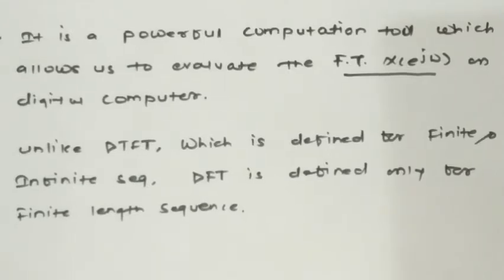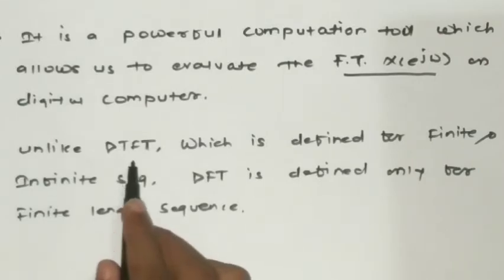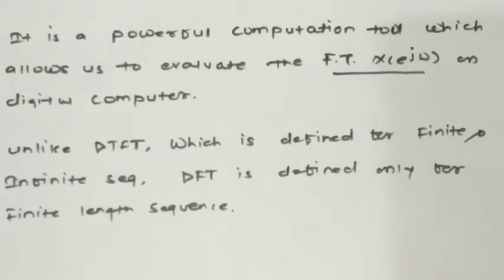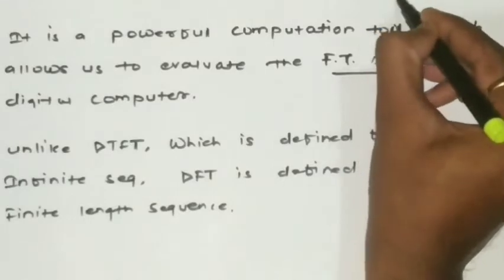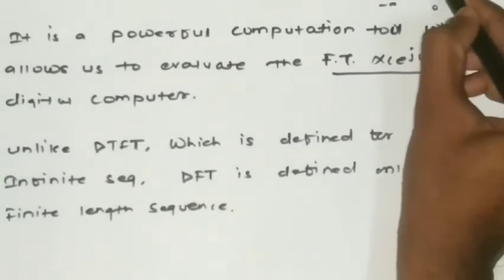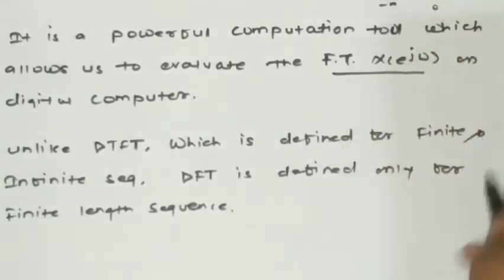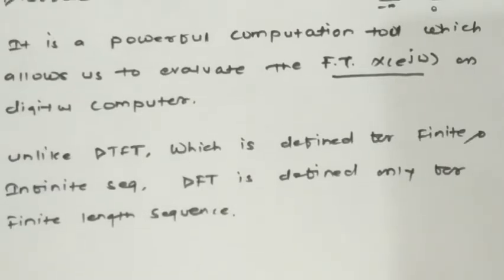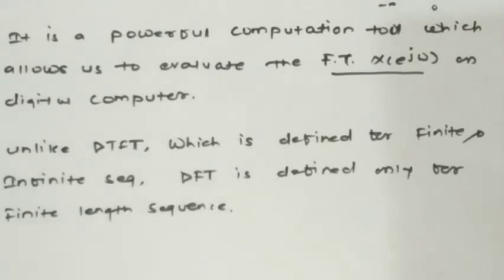DTFT and DFT may differ. Unlike DTFT, which is defined for finite and infinite sequences — having the range of terms from minus to plus infinity, or in some cases from 0 to N minus 1 — DFT is defined only for finite length sequences. This is the basic difference between discrete Fourier transform and discrete time Fourier transform.